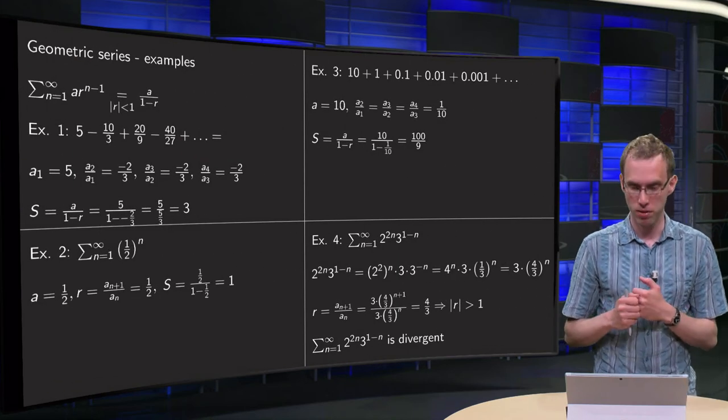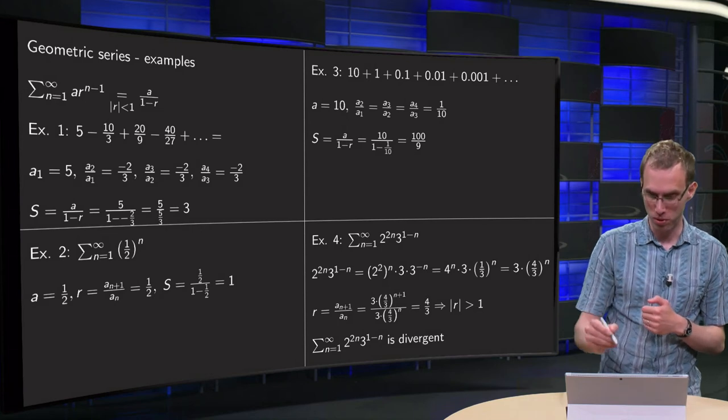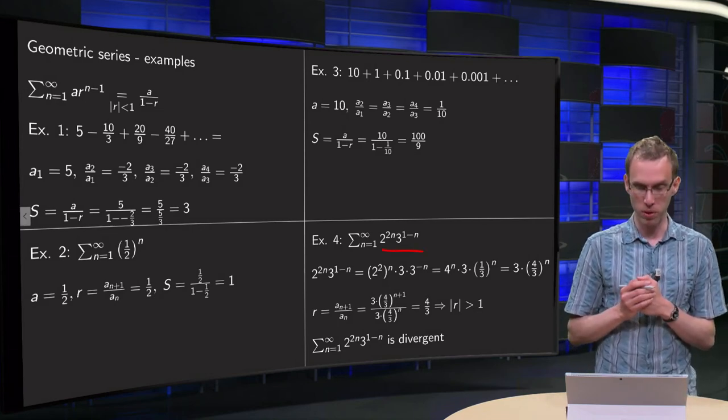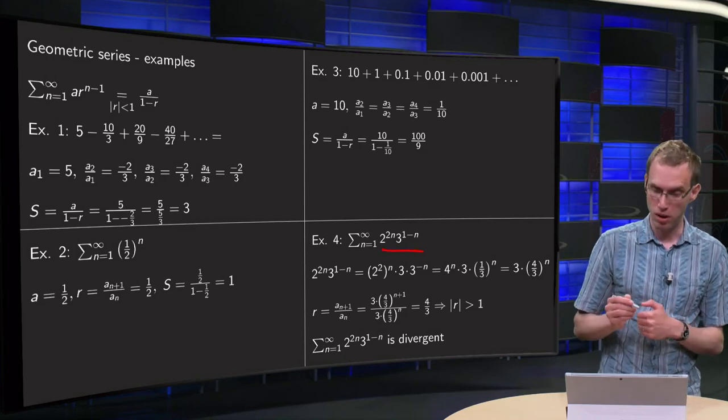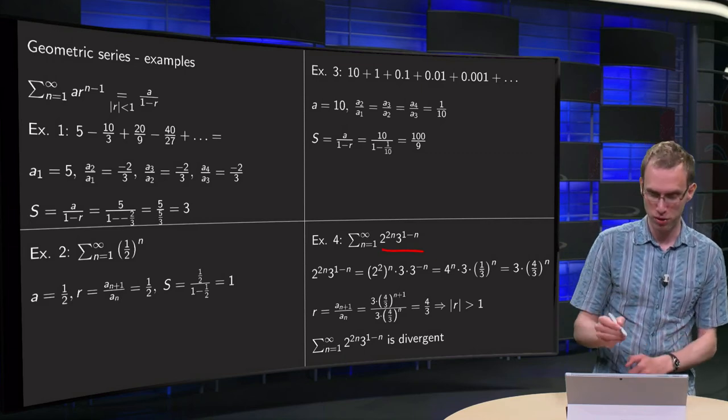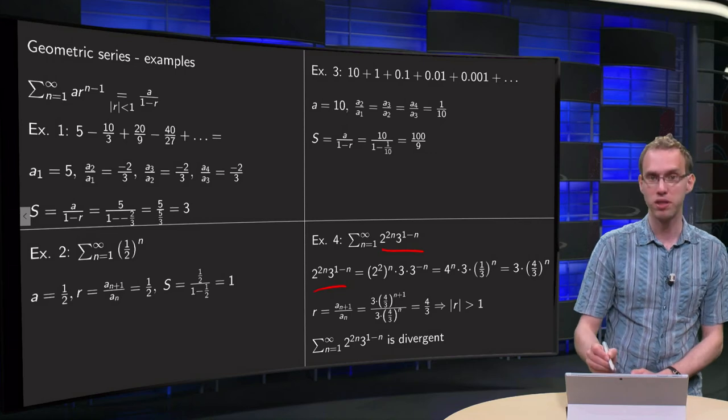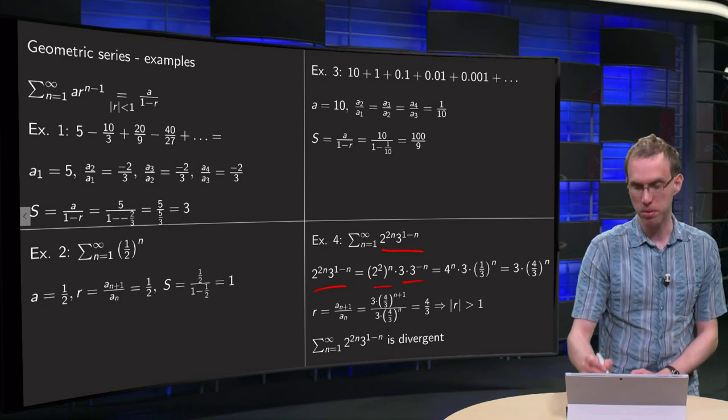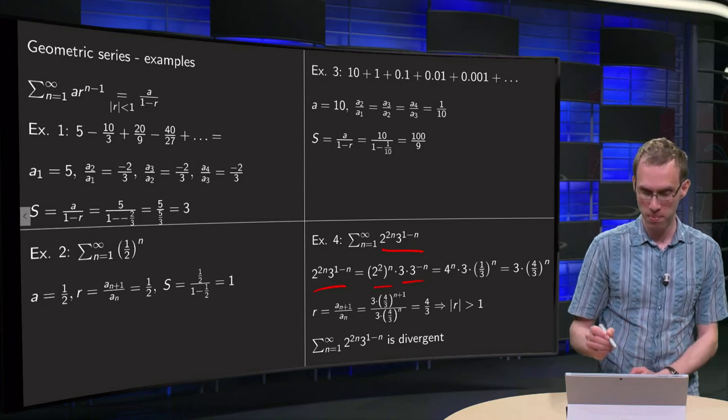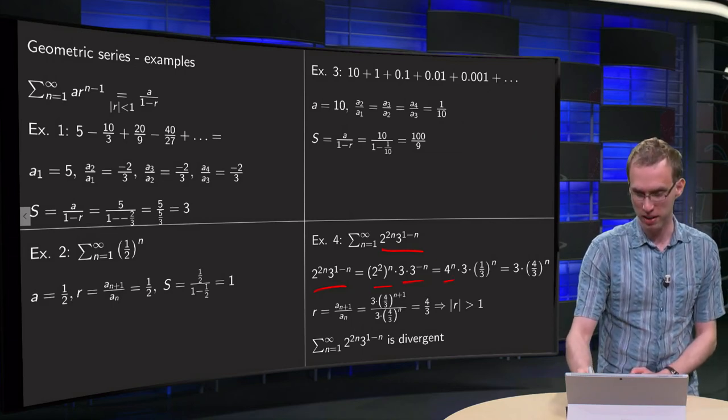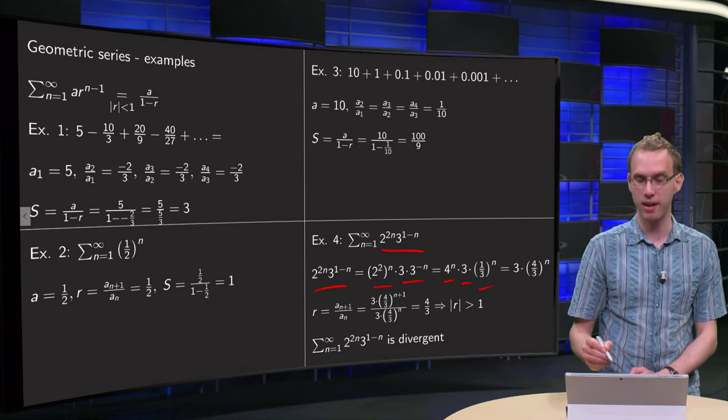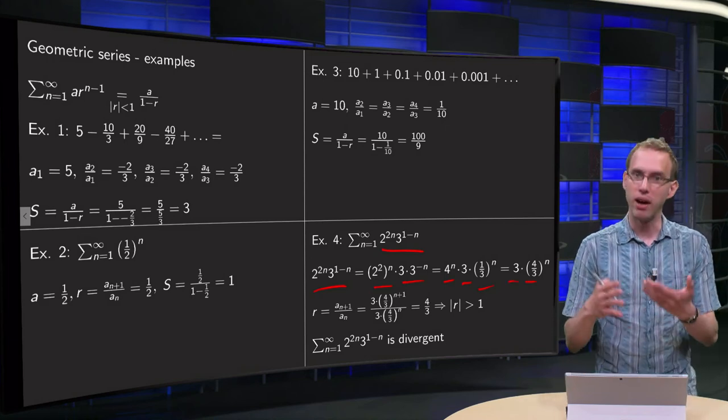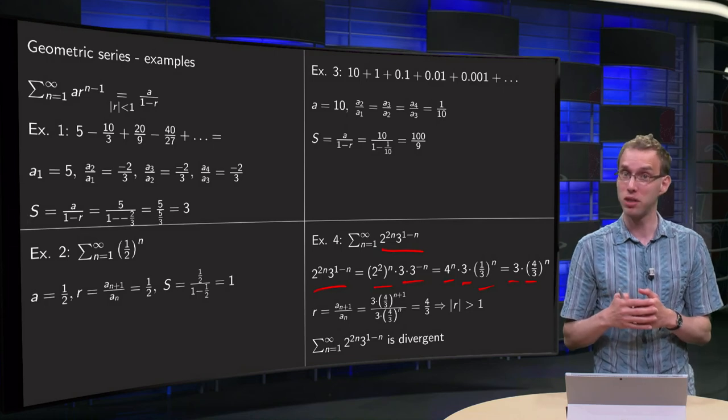And then finally an example which looks a bit more complicated. 2 to the power 2n times 3 to the power 1 minus n. It is convenient to rewrite it first a bit. 2 to the power 2n times 3 to the power 1 minus n equals 2 squared to the power n times 3 to the power minus n. So we have 4 to the power n times 3 times 1 third to the power n. So 3 times 4 over 3 to the power n. And now you recognize this ratio r much easier.